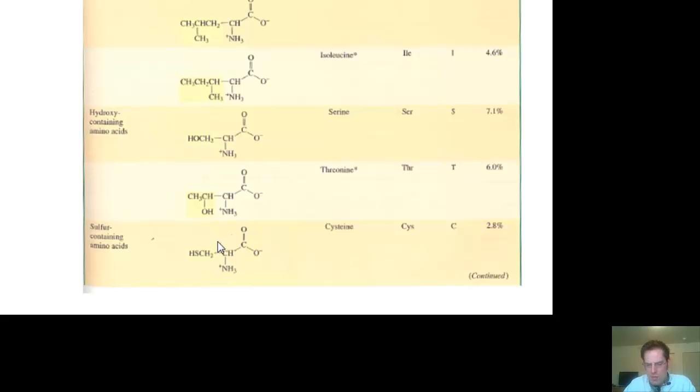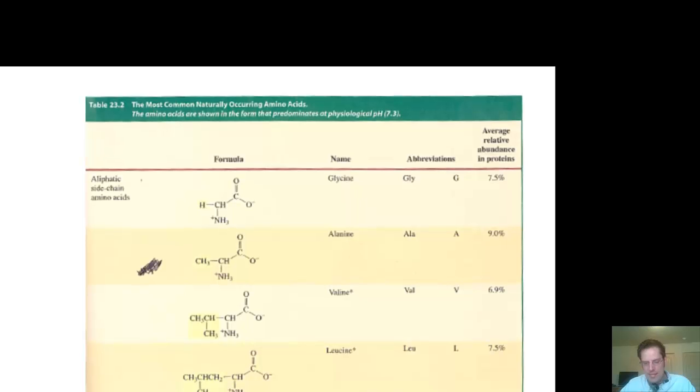Now, one important thing that I wish to point out here is that biochemists like to abbreviate amino acids' names to enable them to be written more quickly and conveniently. Thus, each amino acid has two different abbreviations. One is a three-letter abbreviation. The other is a one-letter abbreviation. Thus, glycine up here, for example, could be abbreviated as GLY if you are using the three-letter abbreviation or simply as G if you are using the one-letter abbreviation.